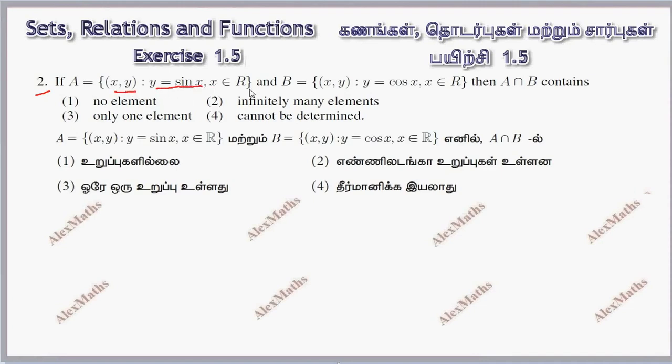Set A: {(x,y) : y = sin x, x ∈ R} and set B: {(x,y) : y = cos x, x ∈ R}.